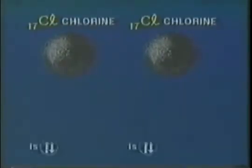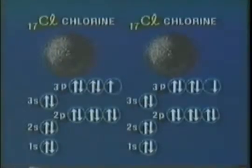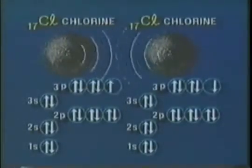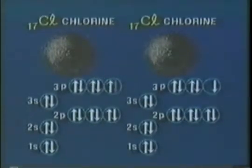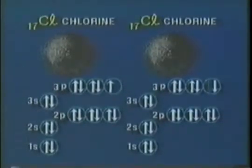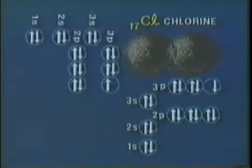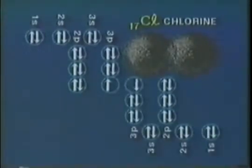What if one chlorine atom encounters another chlorine atom — how would they react? Each chlorine atom has a strong attraction for its own electrons. Each atom requires one additional electron to achieve the electron configuration of argon. The chlorine atoms achieve this by sharing one pair of electrons, forming a diatomic molecule of chlorine.